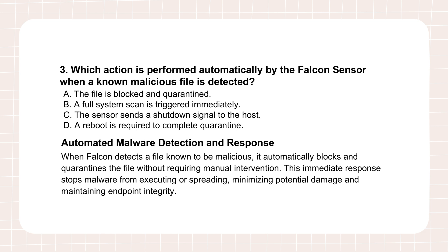Let's switch gears to how Falcon stops things automatically. Question three asks what the Falcon sensor does when it spots a known malicious file. The source gives answer A: the file is blocked and quarantined automatically. No messing around if it's known bad. The explanation confirms it's an immediate action — stops it executing, stops it spreading. That's the preventative power: the sensor acts instantly based on the threat intel it has. It's not waiting for a human to click a button — it's that automated front line.